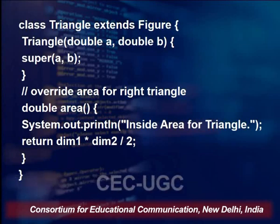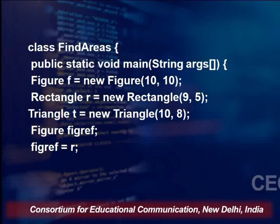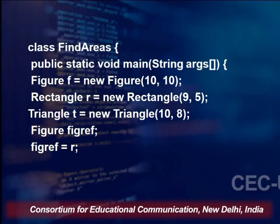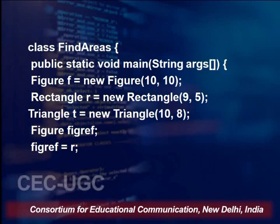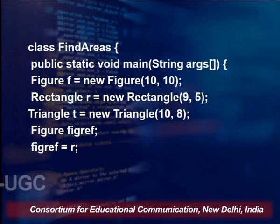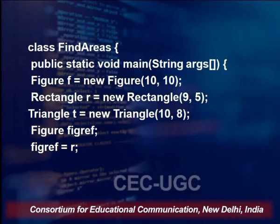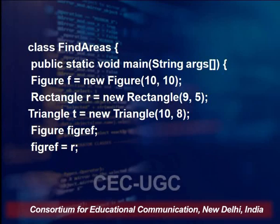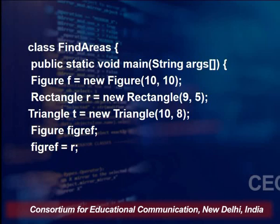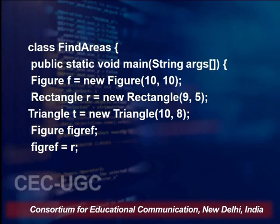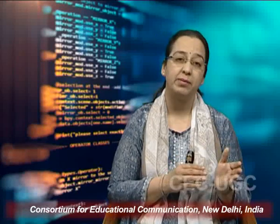Now in the main method, in another class we have the public static void main function. We create a reference variable f as a new Figure(10, 10), a rectangle r with dimensions 9 and 5, and a triangle t with dimensions 10 and 8. We also create a reference variable figRef of the class Figure — the parent class — and this is what we actually did in dynamic method dispatch as well.